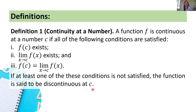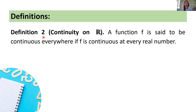So class, this is what we discussed in our topic on illustrating the continuity of a function. Later, we'll give examples on how we can use this and check these conditions. Definition 2: Continuity on the set of all real numbers. A function f is said to be continuous everywhere if f is continuous at every real number.